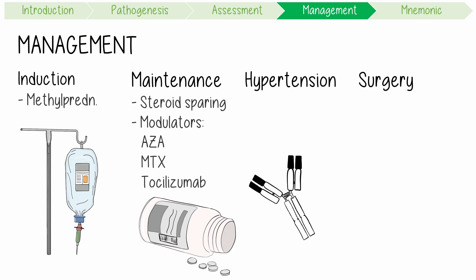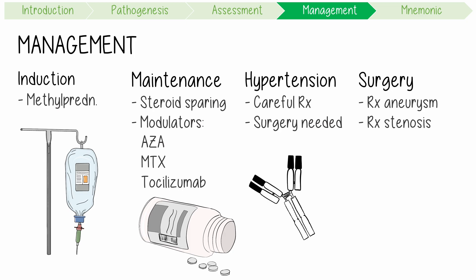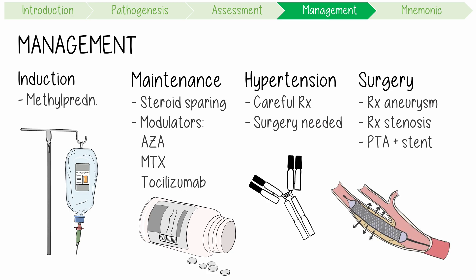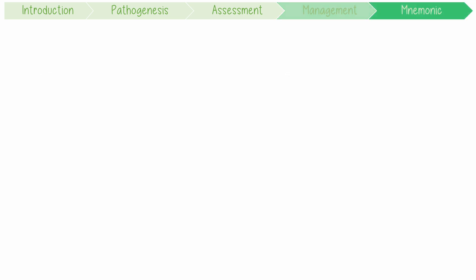Hypertension needs to be managed carefully because severe or even malignant hypertension can occur, and it is often a sign that surgery might be indicated. Vascular intervention may be necessary for aneurysms or stenosed arteries leading to organ ischemia. However, procedures like percutaneous transluminal angioplasty and stent graft placement should be avoided during the active phase of the disease.